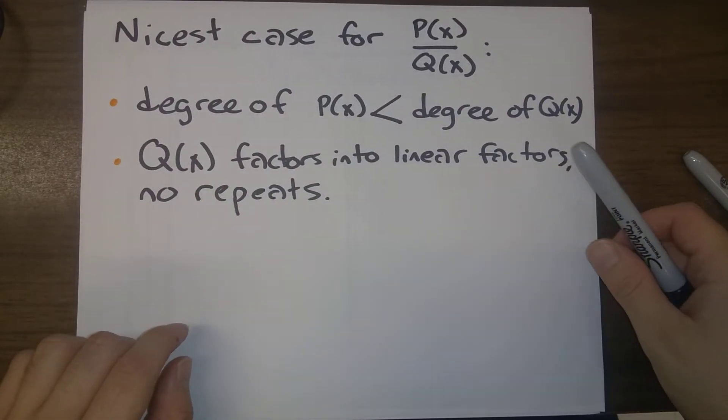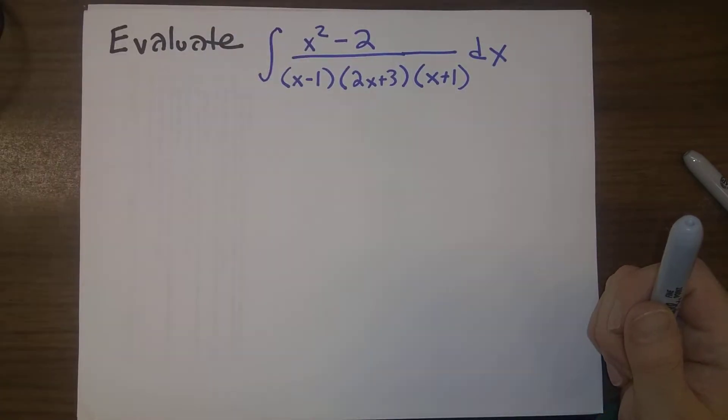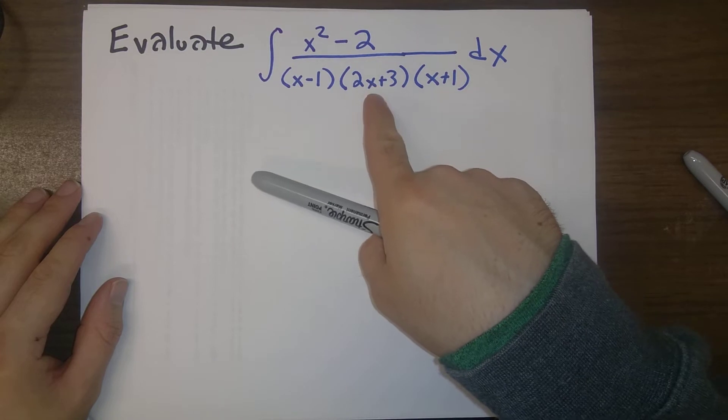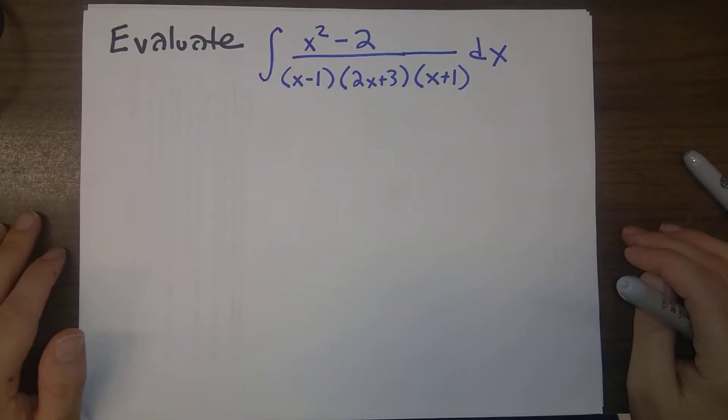And the denominator is factored into linear factors with no repeats. So here we see x minus 1 times 2x plus 3 times x plus 1. That's all factored, no repeats.